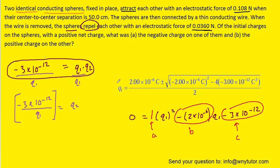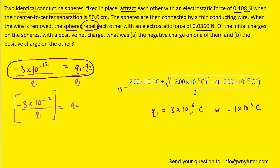We'll come up here to set up the quadratic formula. If you have any questions about that, please let me know in the comments. And when we solve this for q1 on our calculators, of course, we end up with 3 times 10 to the minus 6 Coulombs or negative 1 times 10 to the minus 6 Coulombs.